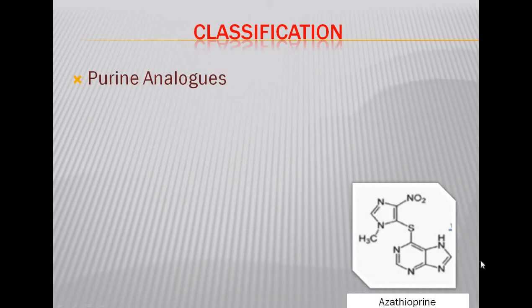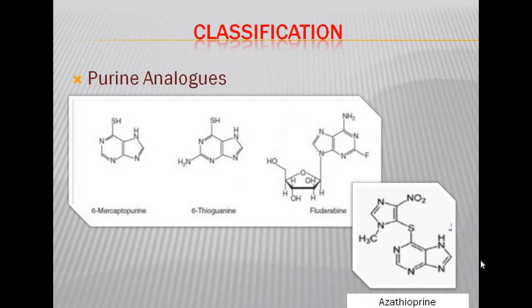The second class of anti-metabolites is the purine analogues, which include mercaptopurine, thioguanine, fludarabine, and azathioprine. All structures are similar to hypoxanthine and guanine, with the replacement of the 6-hydroxyl group with a thiol or sulfhydryl group. Mercaptopurine has a mercapto group at the sixth position; thioguanine is a 6-mercapto analogue of guanine; azathioprine is a derivative of mercaptopurine; and fludarabine contains a ribose sugar in its structure.